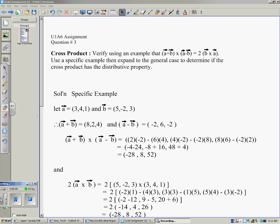Question number 3 asks students to verify, using an example, that A plus B cross A minus B is equal to 2 times B cross A.